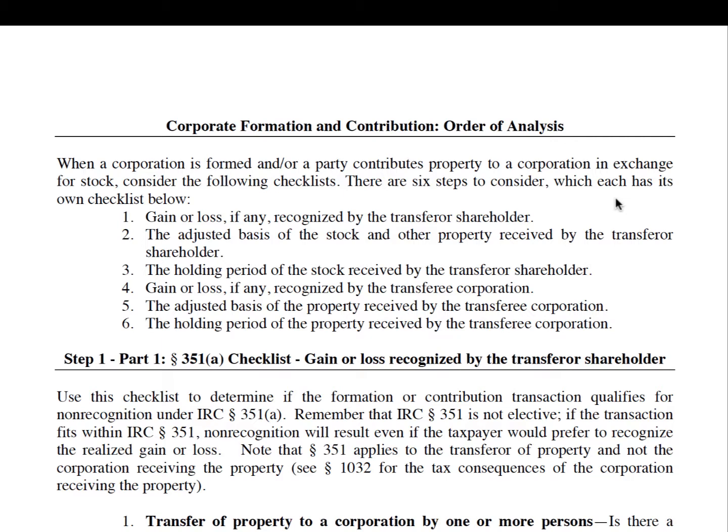The first three steps deal with the transferors. The last three steps — steps four through six — deal with the transferee corporation. In the last video, we were considering Section 351A, which is a general rule that allows for non-recognition of the transferor shareholder. That's step one. We have yet to consider Section 351B, and that's the purpose of this video.